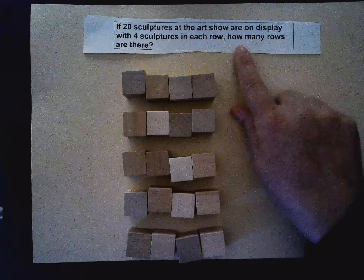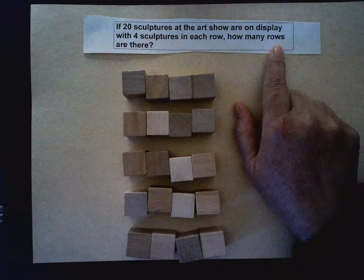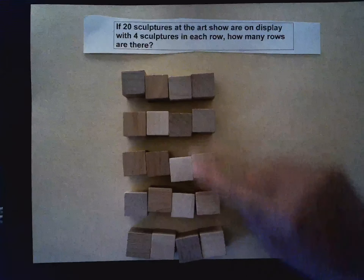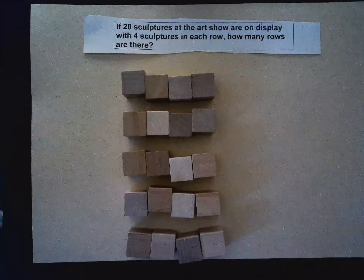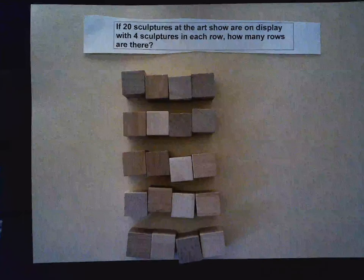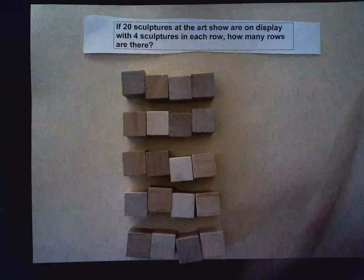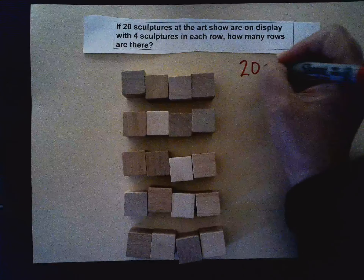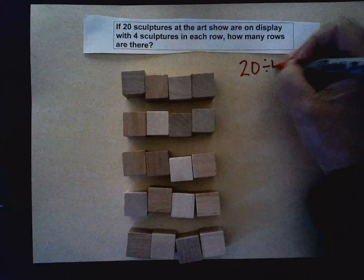And the last one is five. So the question is how many rows are there? Let's count them: one, two, three, four, five. There are five rows. So how would I write my division problem? My division problem would be 20 divided by four.